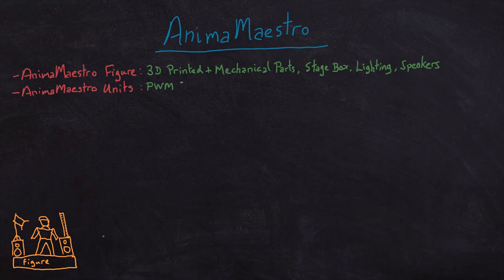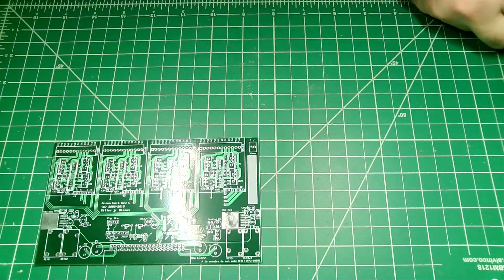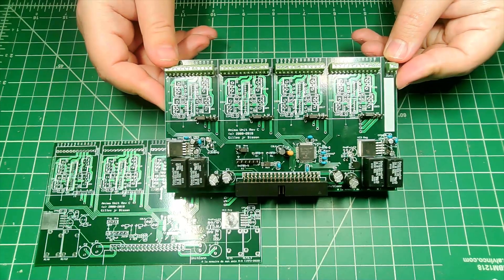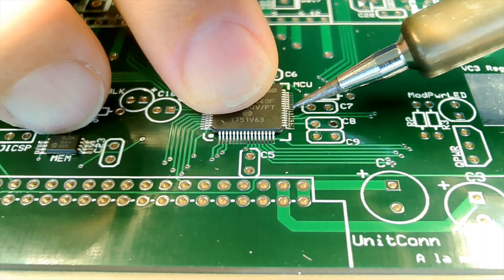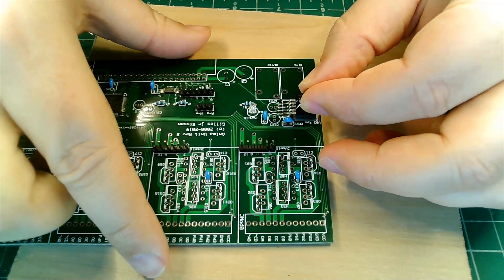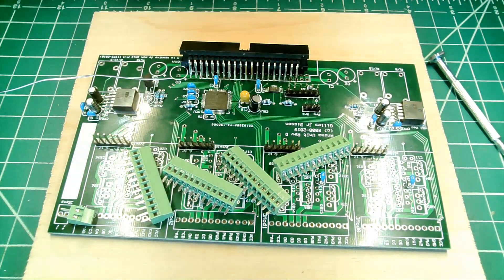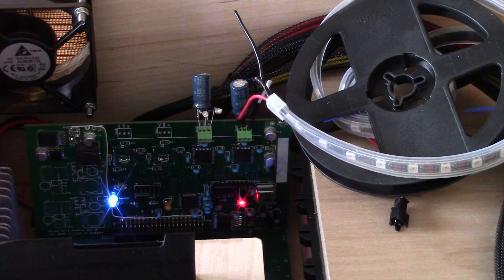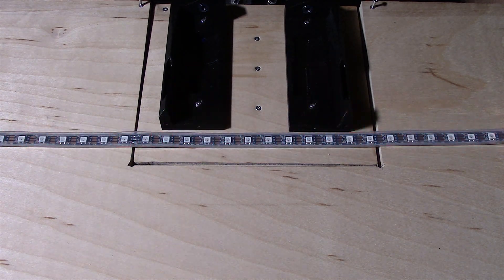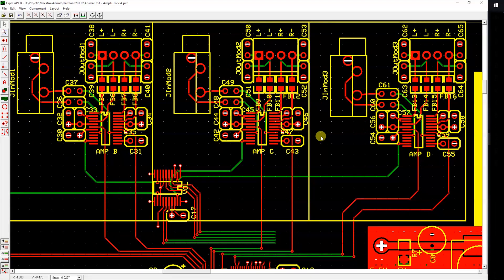The second series is the Anima Maestro Units series, focusing on the design and implementation of the units' electronic boards. Each unit includes power management components, an EEPROM to store configuration data, and a Microchip PIC32MX microcontroller. The project currently has three types of units: PWM units that can each generate up to 16 PWM signals to drive DC motors, servo motors, and RGB LEDs; NeoPixel units that can each control four NeoPixel strips for nearly 250 NeoPixels at full brightness; and amplifier units, each with four stereo 3W amplifiers to provide sound and music.